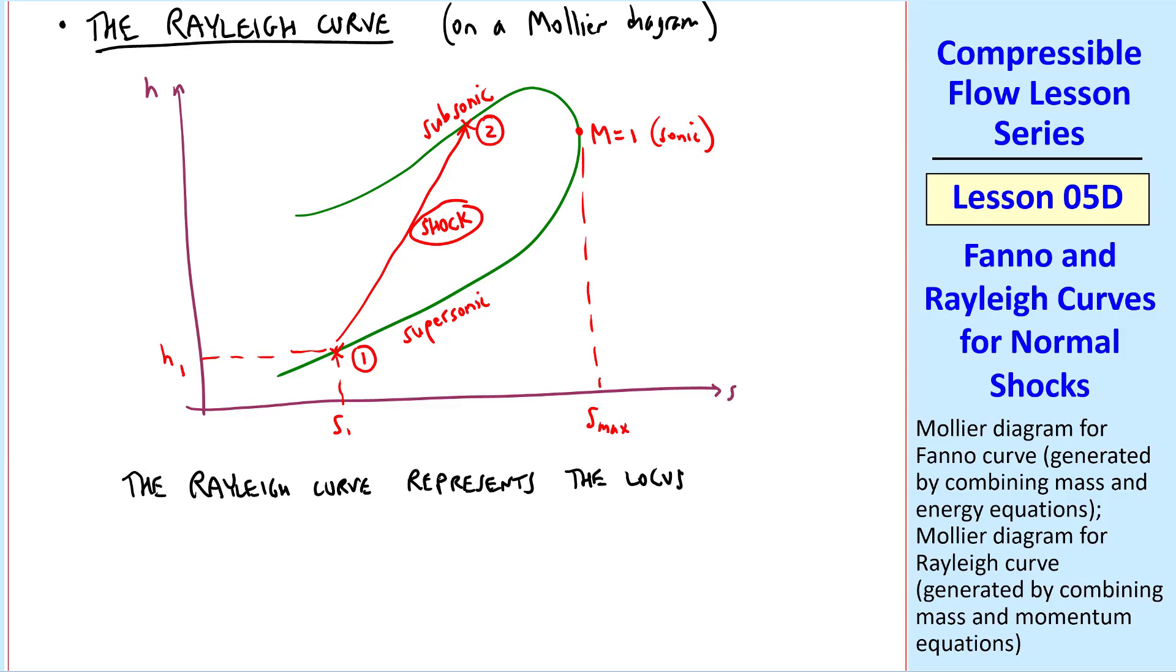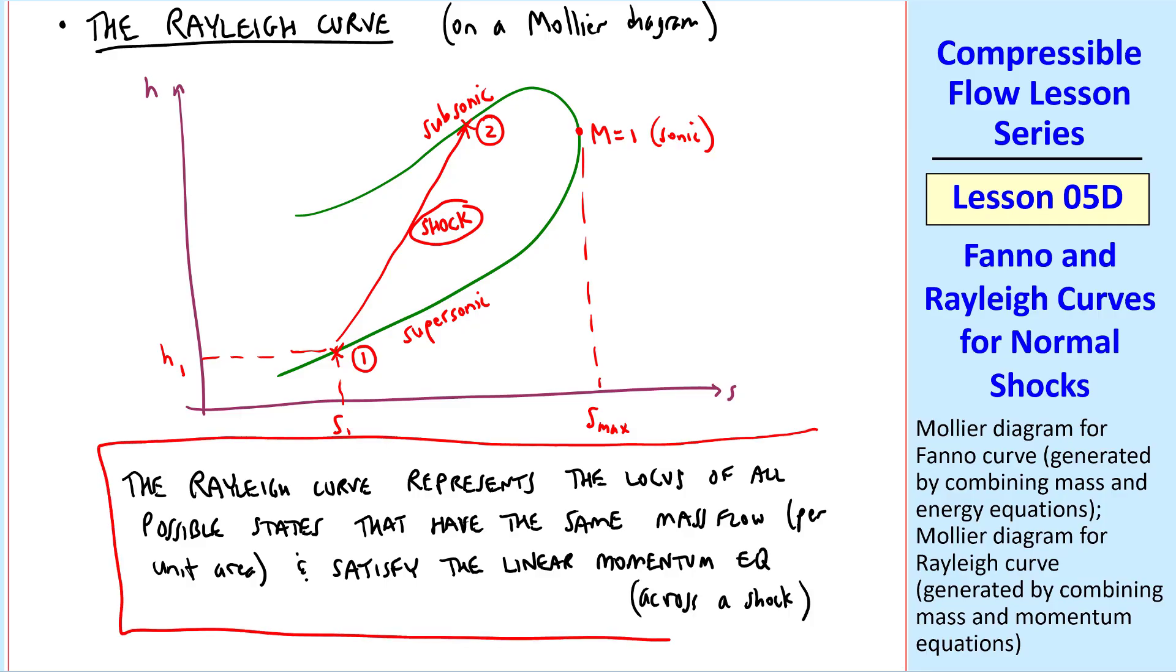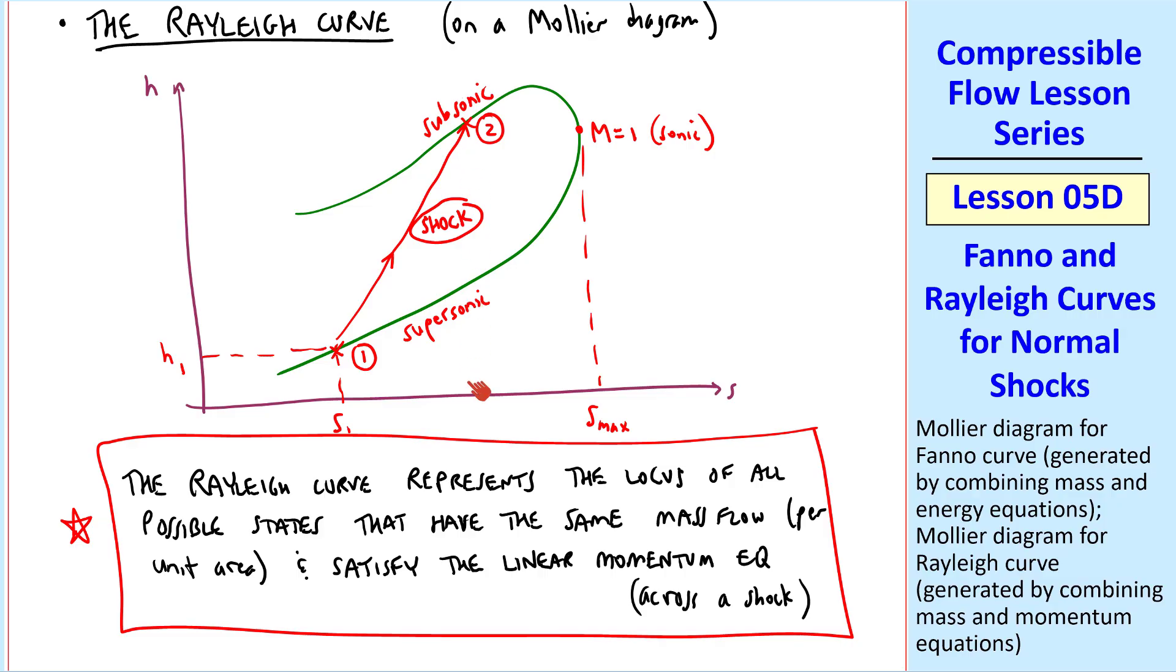And I'll give a formal definition. The Rayleigh curve represents the locus of all possible states that have the same mass flow, again per unit area. So far this is identical to the Fanno curve, but we differ here because now we say and satisfy, not energy, but the linear momentum equation across the shock. This is the definition of the Rayleigh curve. And this locus of points that we plotted does not necessarily satisfy the energy equation, only the mass and momentum equations. But when we start with 1, there's only one point on this curve that is valid as point 2 across a shock. And I also want to mention that in both the Fanno curve and the Rayleigh curve, entropy across the shock must increase. So we go only in one direction here, from supersonic to subsonic, with an increase in entropy. S2 must be greater than S1. The same thing was true with Fanno.